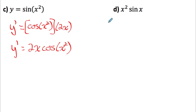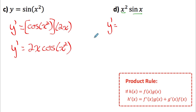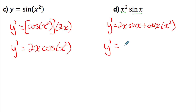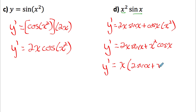Part D introduces the product rule. We have x squared times sine x — a product of two functions. Product rule: derivative of the first (2x) times the second (sin x), plus the derivative of the second (cos x) times the first (x squared). This gives 2x sin x plus x squared cos x. We can factor out x to get x(2 sin x + x cos x).